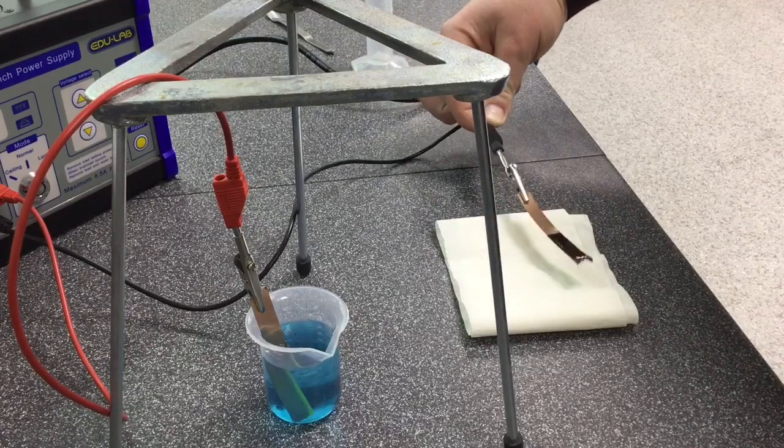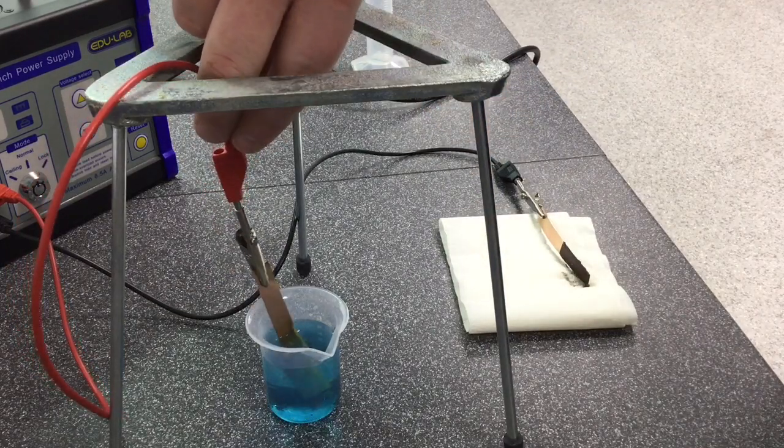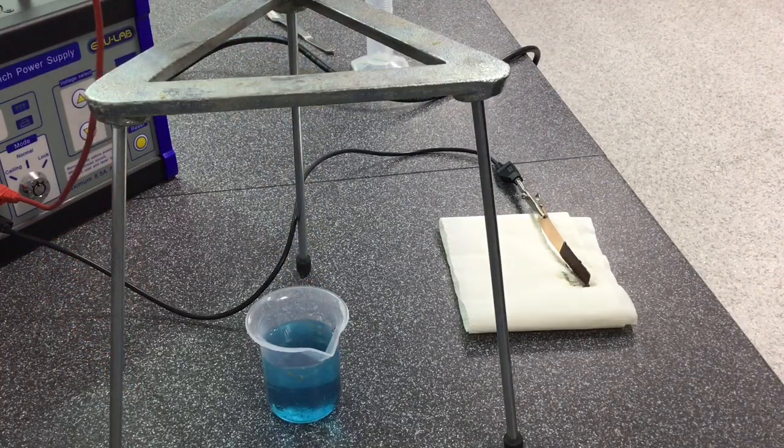However it is evident that the cathode has gained some mass whilst when you remove the anode represented by the red wire you can see that this has reduced in mass slightly.